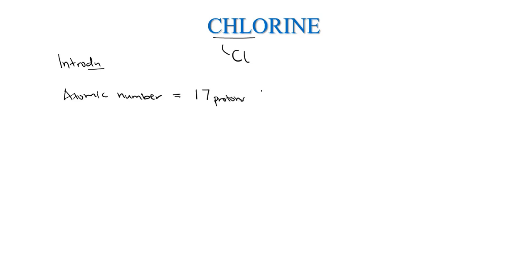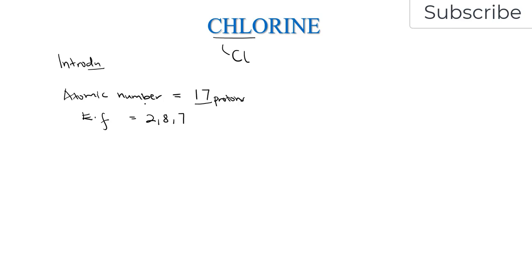From the atomic number, chlorine's electronic configuration will be 2, 8, 7. Obviously chlorine and all these elements are very small for us to see them, but people have studied them and realized that any atom that has 17 protons will be the chlorine atom.